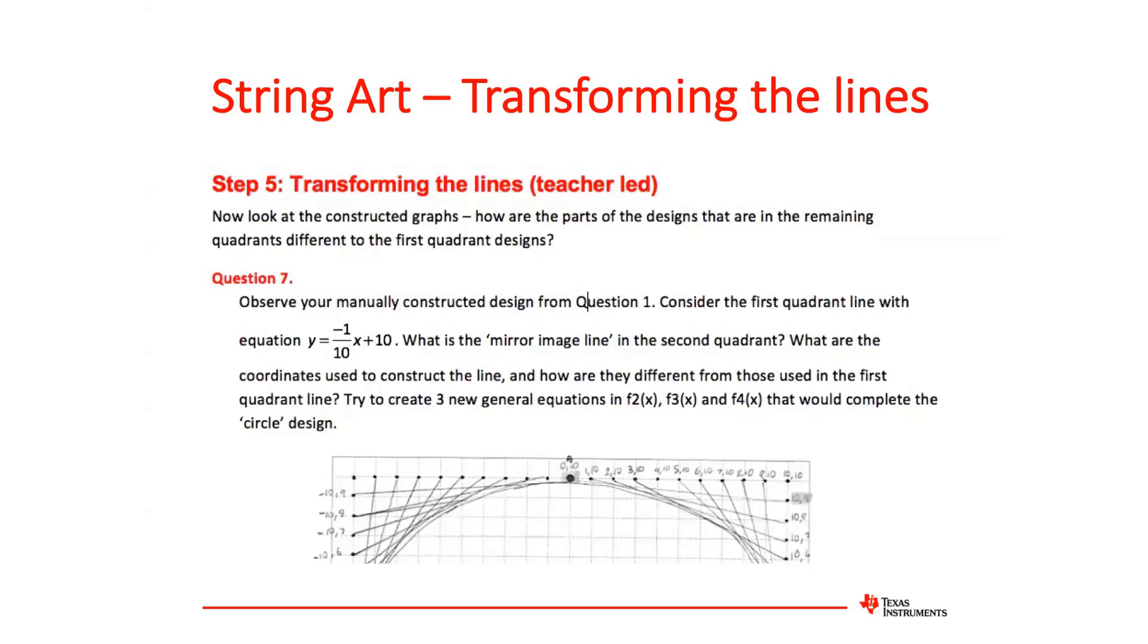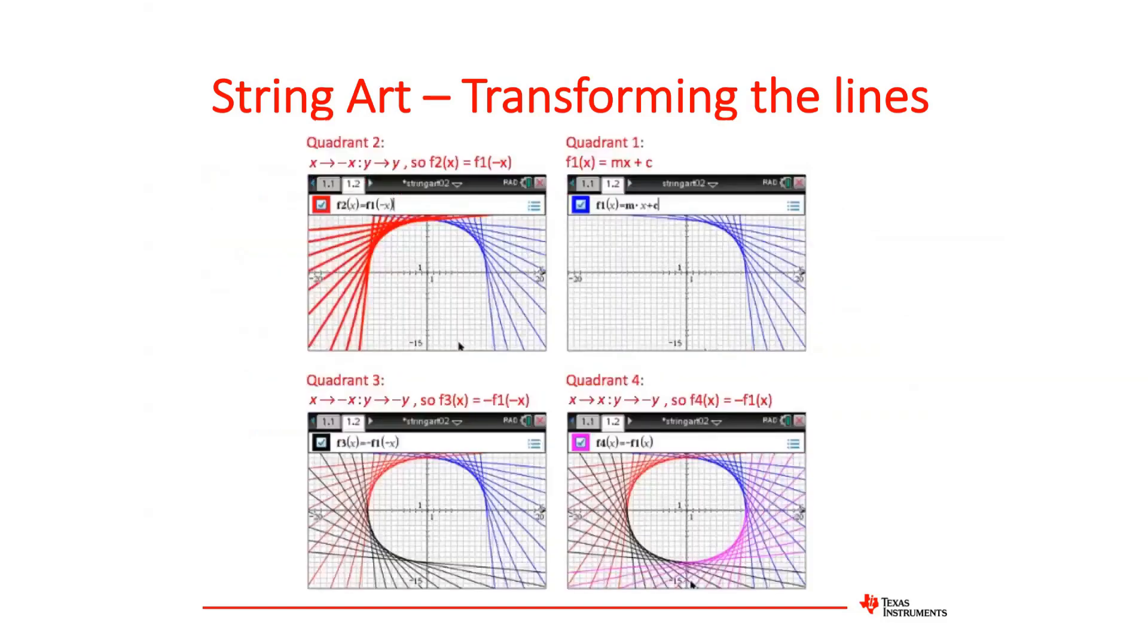So just to summarize, because it takes a little while to go through this process. This shows the result of such a process. So you'll notice the top right screen is the original set of lines. The one on the top left, the second quadrant set of lines is obtained by just saying that F2 of X is equal to F1 of minus X. So you're changing X to minus X.